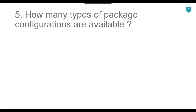The fifth question is how many types of package configurations are available. Package configurations are used to provide new property values or new values for SSIS variables at runtime. There are two types of deployment: package deployment, where an individual package can be deployed to different destinations, and project deployment, where the whole SSIS project can be deployed to the SSIS catalog. In package deployment there are different kinds of package configurations.